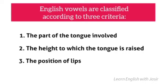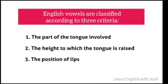These are the three criteria by which English vowels are classified. The first criterion is the part of the tongue involved. The second criterion is the height to which the tongue is raised. The third criterion is the position of the lips — how the lips are positioned during the articulation of vowel sounds.